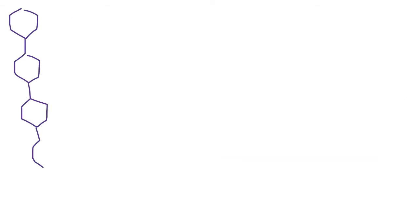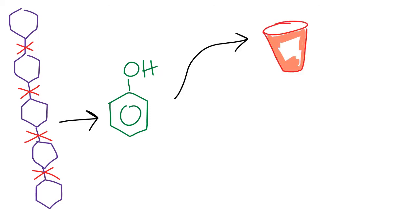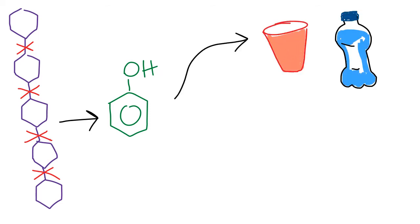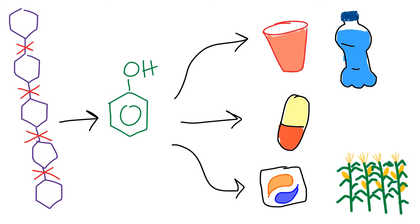Lignin is a random aromatic polymer linked together by ether and aryl bonds. If we can depolymerize lignin by breaking these bonds, we can produce monoaromatic chemicals such as phenol. These monoaromatic chemicals can be used as starting points for many different products such as plastics, pharmaceuticals and medicine, detergents, herbicides, and many other products.